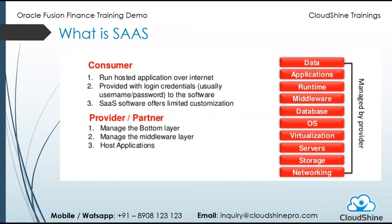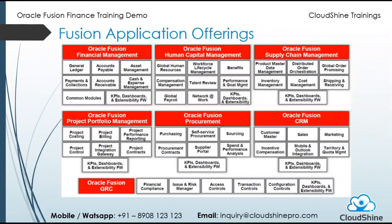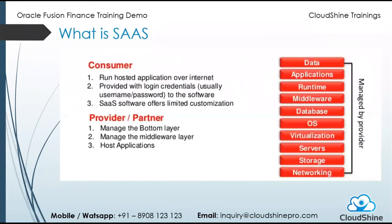If you want to build a new page and integrate it with Fusion, that is not allowed in SaaS. For that, you need a PaaS application installed, and through the PaaS application you can build extensions like new pages, which can then be integrated into Fusion. If you purchase only SaaS, those kinds of customizations are not allowed. Before going to other Fusion application offerings, let's understand why PaaS is required in addition to SaaS in terms of components.